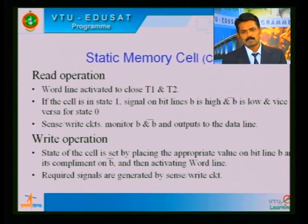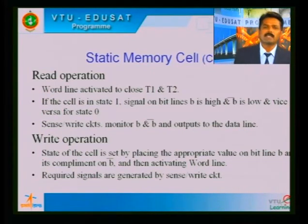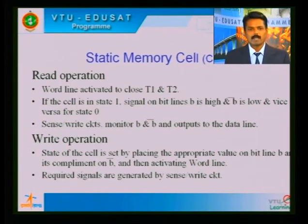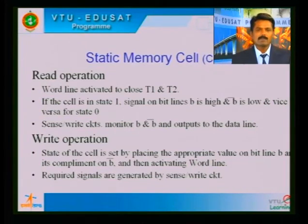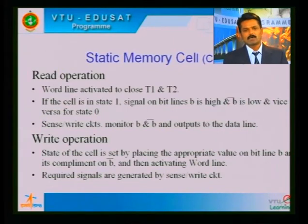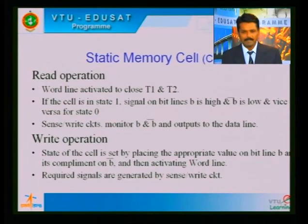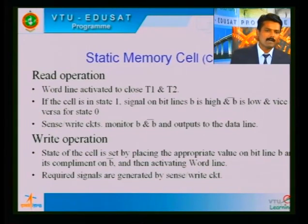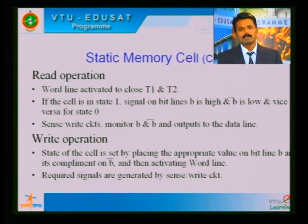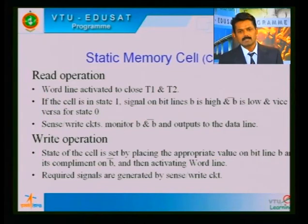In the SRAM read operation, the word line is activated, turning on T1 and T2. If the cell is in state 1, the signal on bit line B is high and B-bar is low; vice versa for state 0. The sense circuit monitors B and B-bar and outputs to the data line. For a write operation, the appropriate value is placed on bit line B and its complement on B-bar, then the word line is activated to set the cell state.